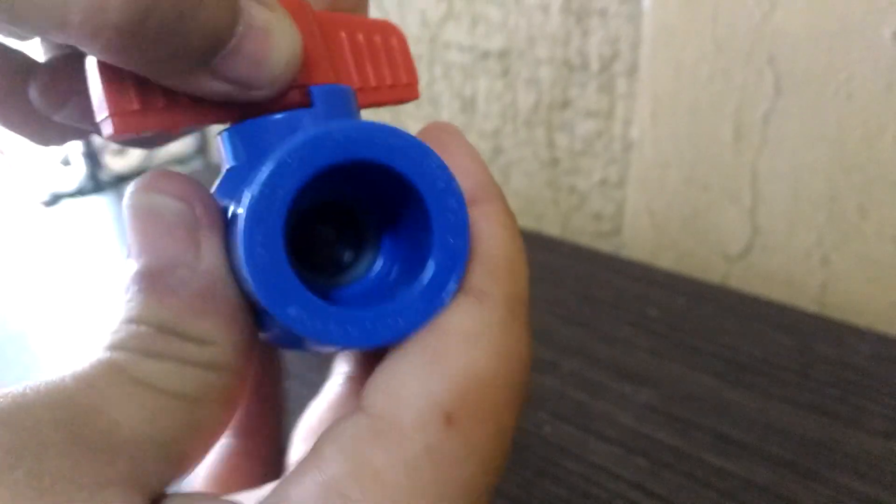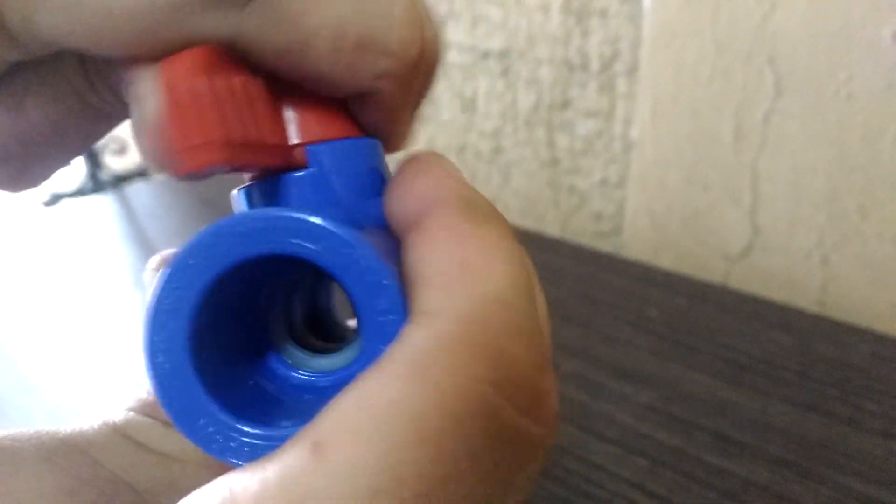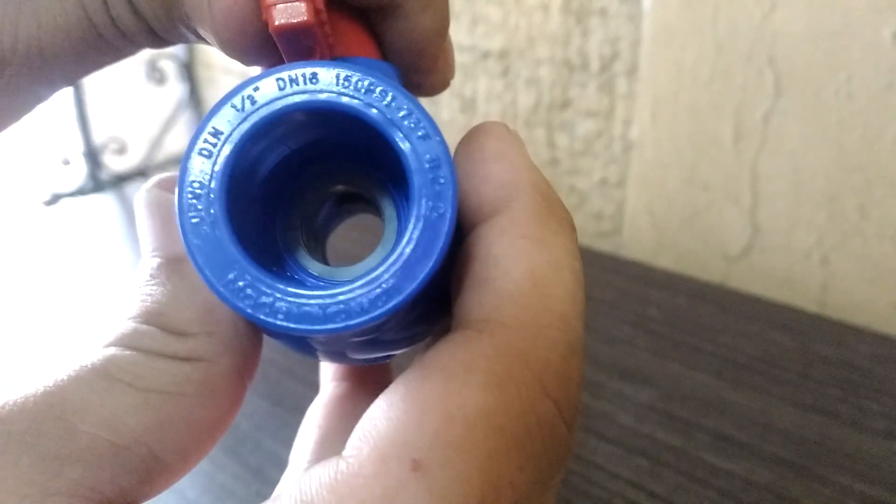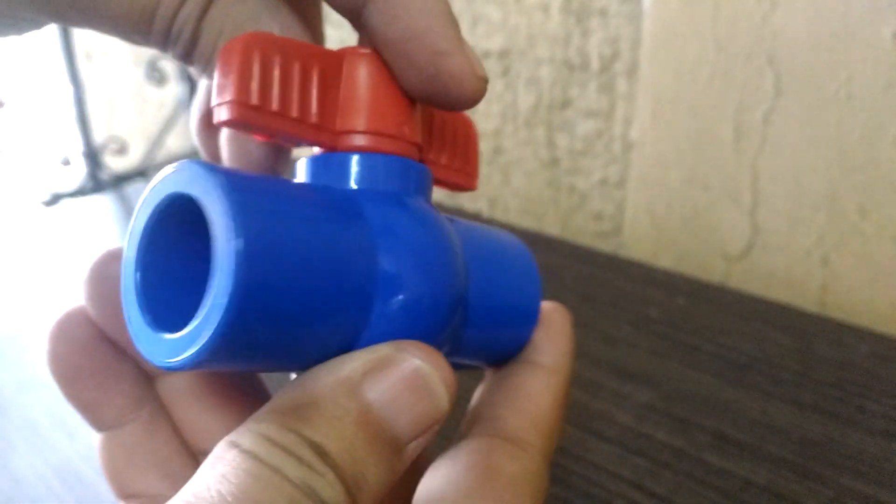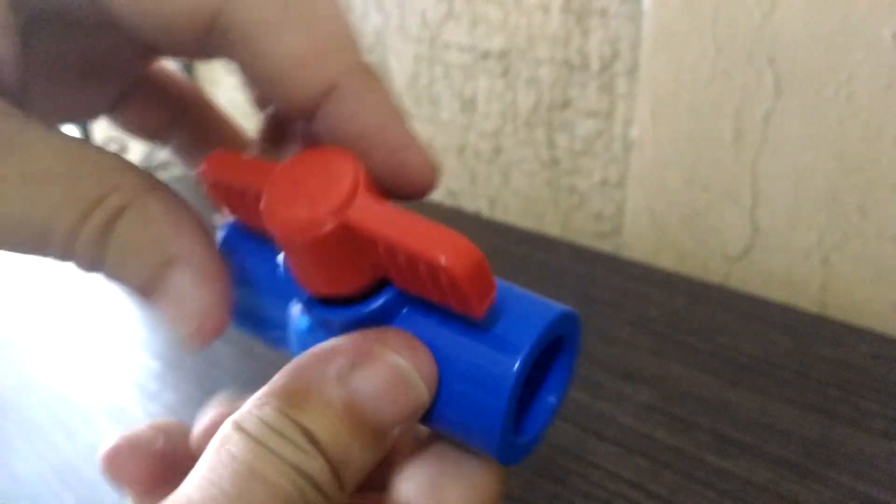It has a lever designed to turn only a quarter of a circle clockwise to close and counterclockwise to open. There's no risk of over tightening and no rubber washers or gaskets to worry about that may become brittle over time and cause leaks.